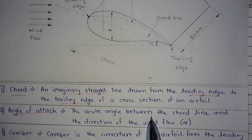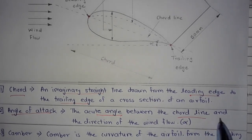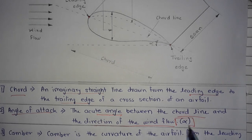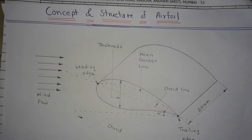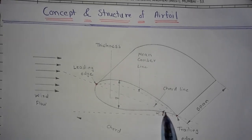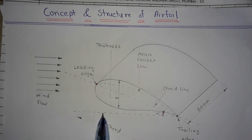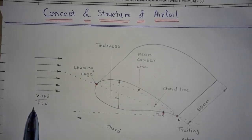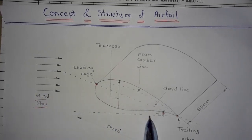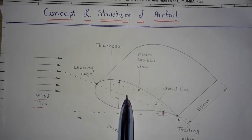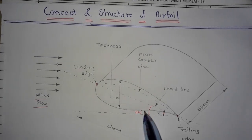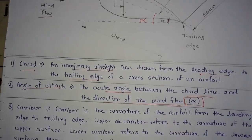Next is angle of attack. The angle of attack is the acute angle between the cord line and the direction of the wind flow. It is denoted by alpha. In the diagram, this is the angle of attack, this is the wind flow line, and this is the cord line — so alpha is the angle between these two.